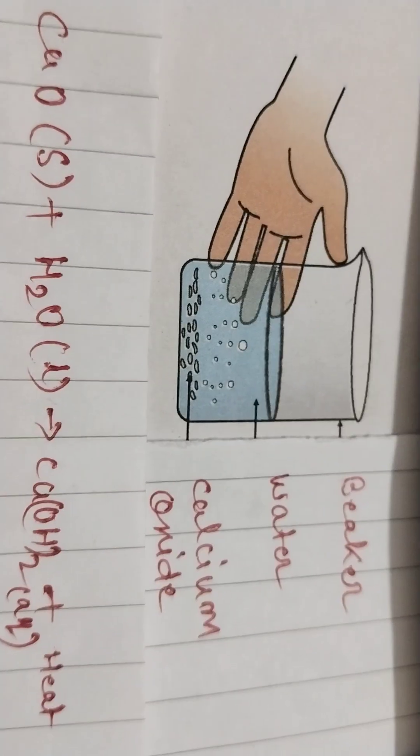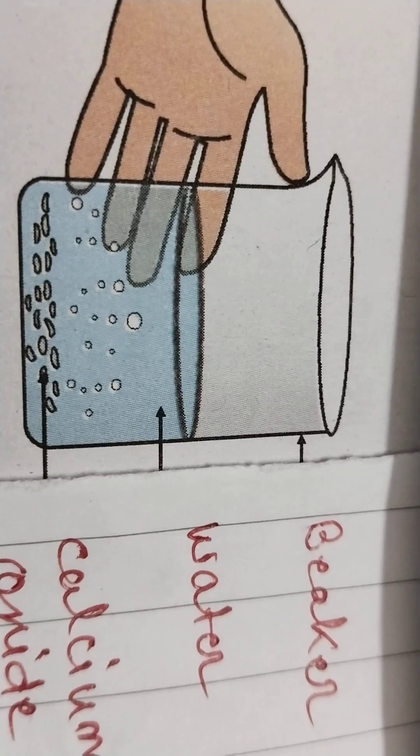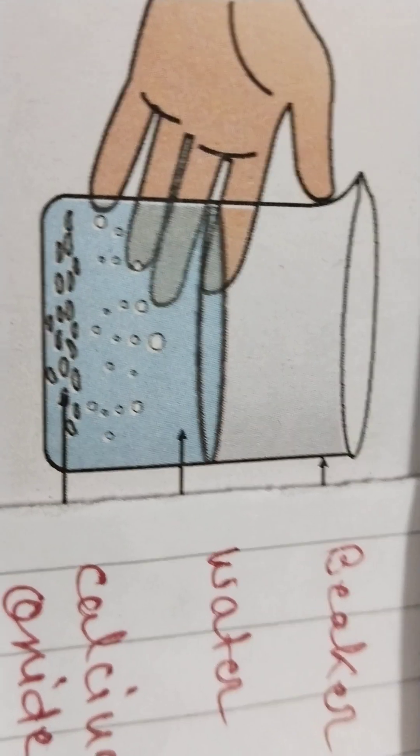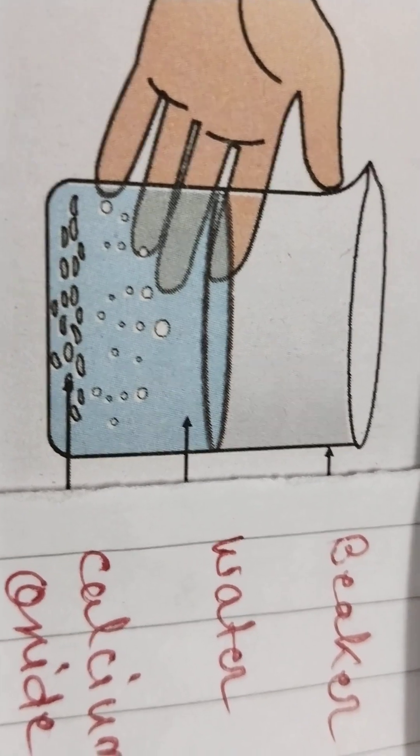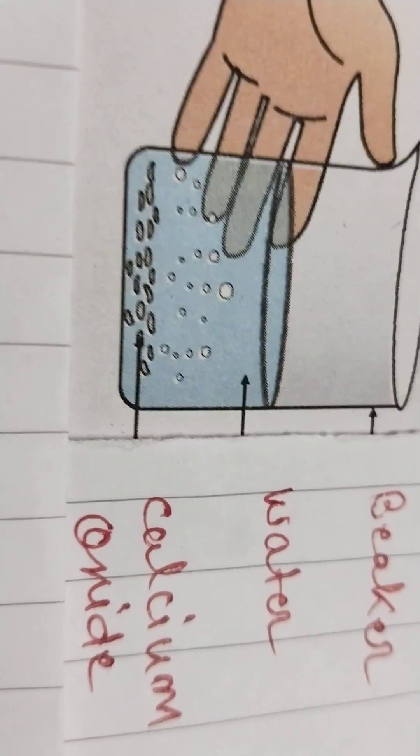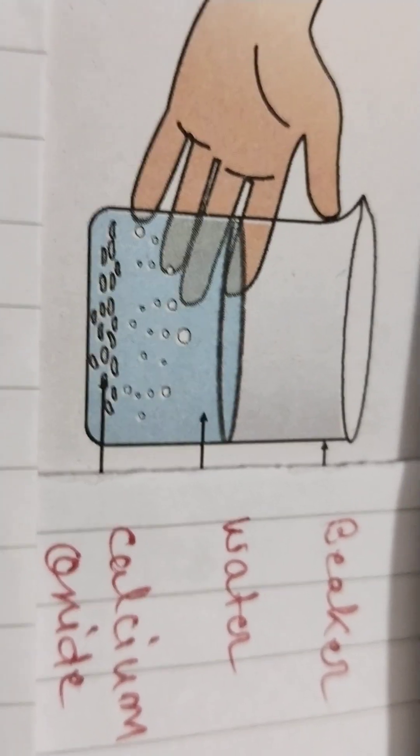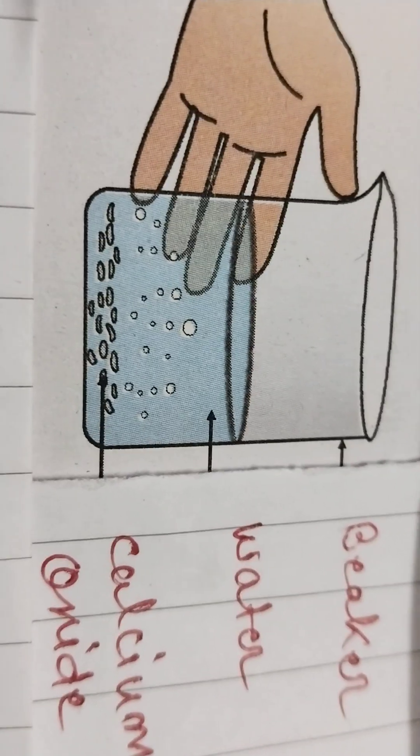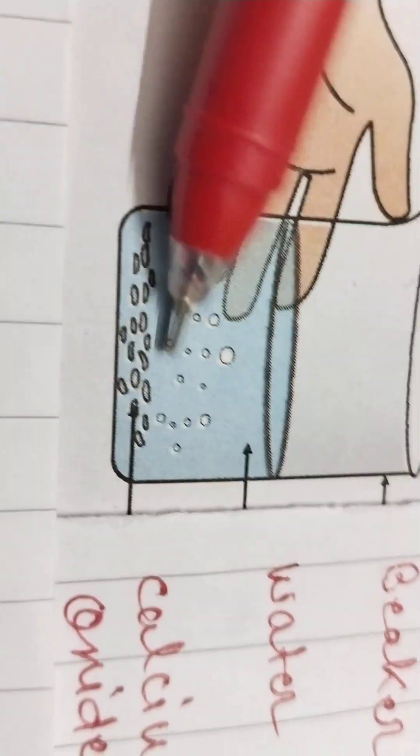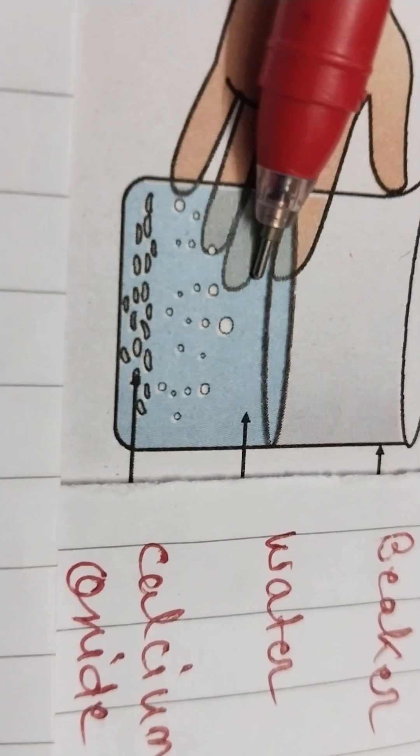Another definition you can learn here. In any reaction, when heat is released during the reaction, this type of reaction is called an exothermic reaction. Here, when water combines with calcium oxide, heat is released. So this is also one example of an exothermic reaction.